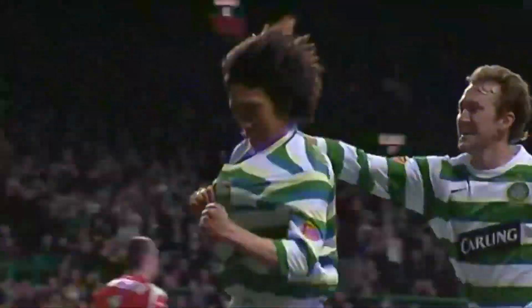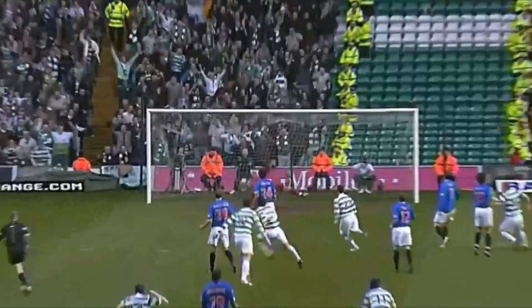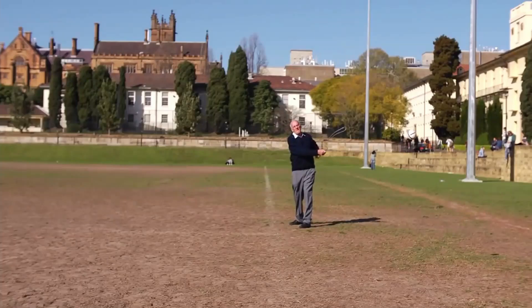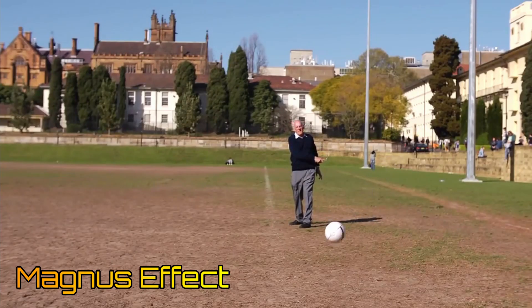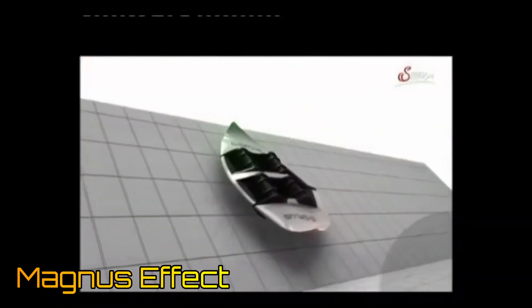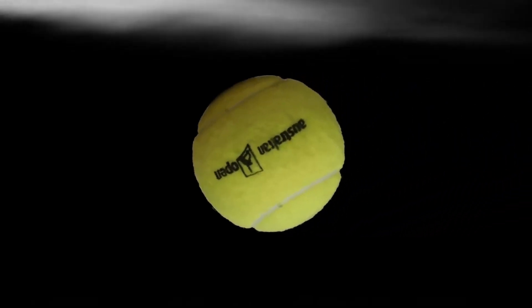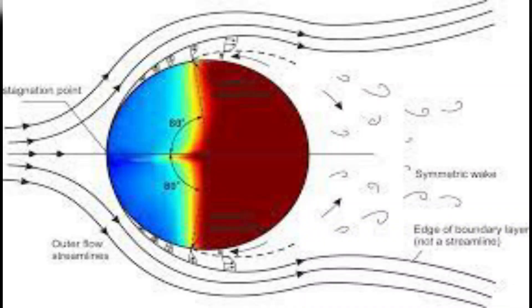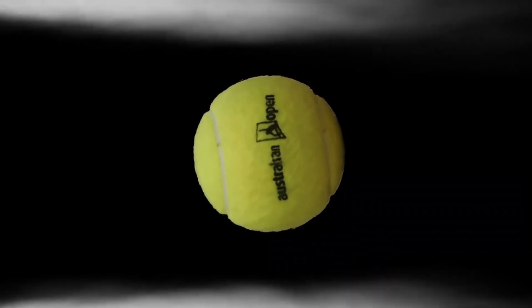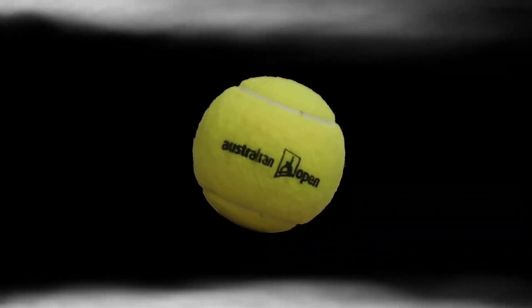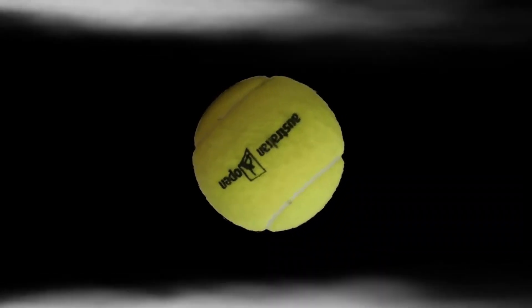My apologies to the Rangers fans here for using this example. The curving of the ball trajectory shown here is due to the phenomenon known as the Magnus effect, which has been used not only to make aircraft but also ships. Note that an object moving through the air will face pressure, and this pressure is concentrated around the stagnation point.